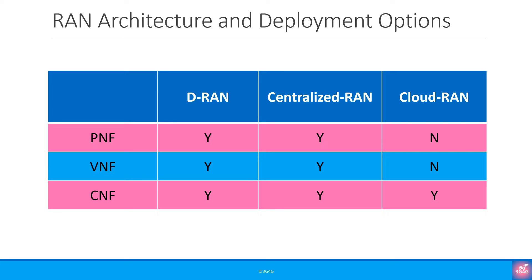We can summarise the RAN architecture and deployment options as shown here. We often find people object to having VNFs or CNFs deployed as DRAN, but that is how a lot of deployments are today. Notable exceptions are operators in China, Japan, South Korea and a few other geographies.